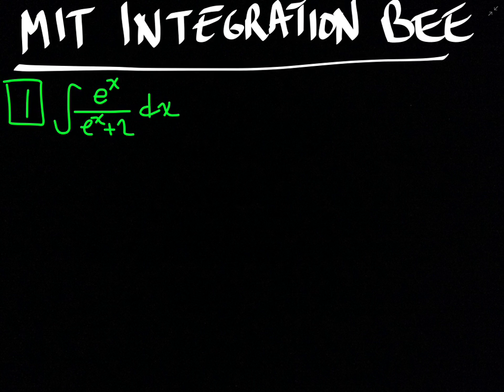It's the integral of e^x over (e^x + 2) dx. I think we're going to start with our favorite trick, which is u-substitution.